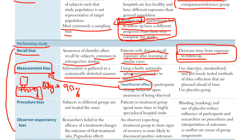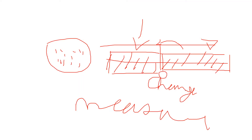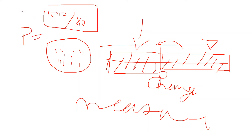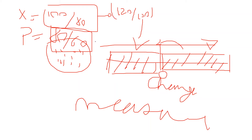You can also use a placebo group. Even if you're using a faulty sphygmomanometer — say the treatment group averages 100/80 and the placebo group averages 80/60 — both groups share the same measurement error. Even if the true values were 120/100 and 100/80 respectively, the difference between groups remains the same. So a placebo group ensures the same error is applied to both, and the comparison between groups is still valid.